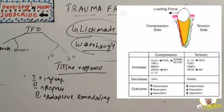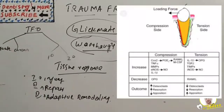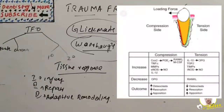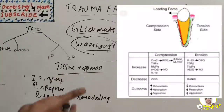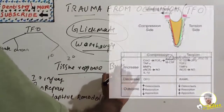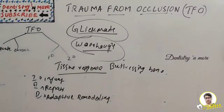Stage 2 is repair, which constantly occurs in normal periodontium. Trauma from occlusion stimulates increased reparative activity. Damaged tissues are removed and new connective tissue cells, fiber, bone, and cementum are formed to restore the injured periodontium. When bone is resorbed by excessive occlusal forces, the body attempts to reinforce thin bone with new bone — this compensation mechanism is called buttressing bone formation, and is an important feature of trauma from occlusion.